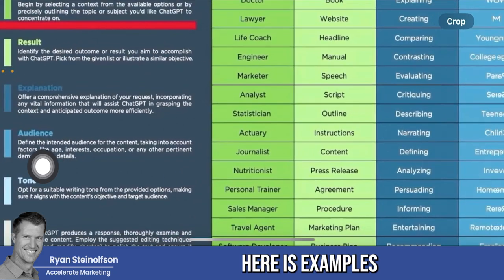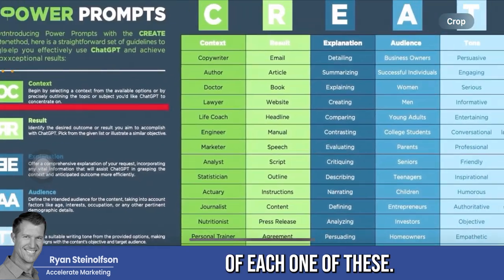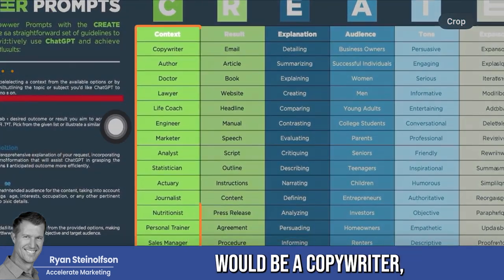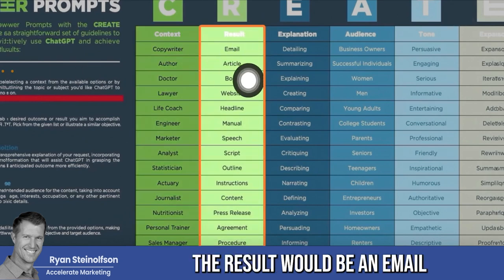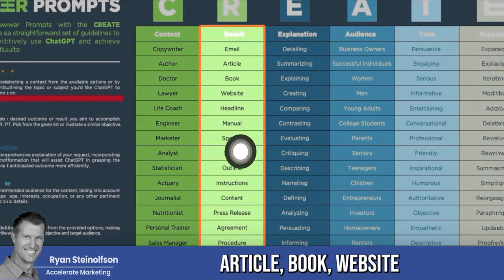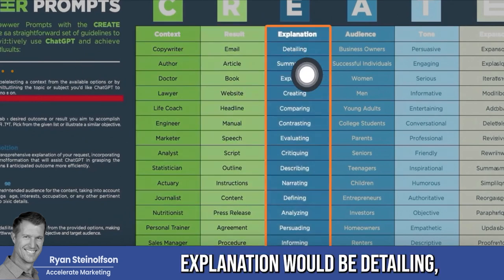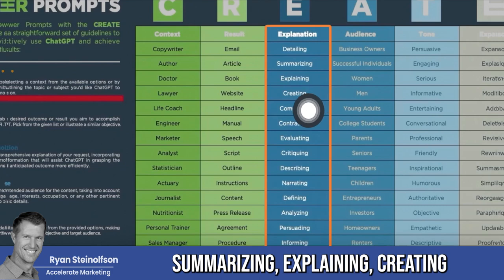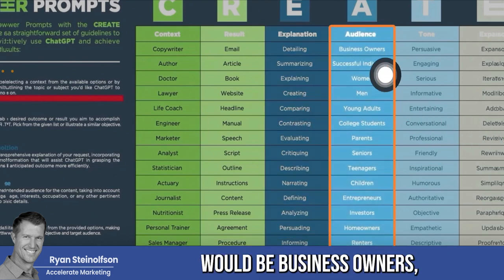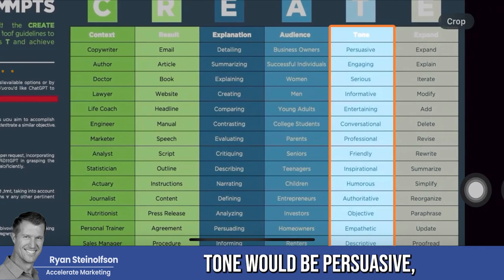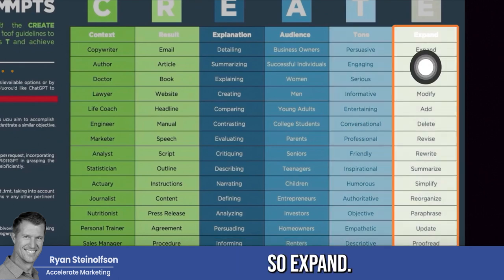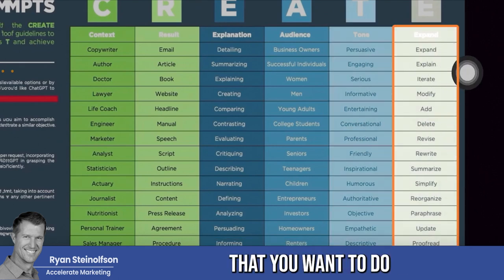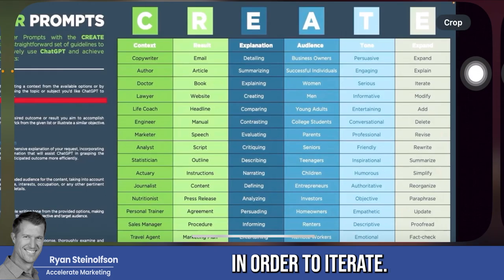Here are examples of each element. Context could be a copywriter, author, etc. Result could be an email, article, book, or website. Explanation includes detailing, summarizing, explaining, or creating. Audience could be business owners, successful individuals, women, or men. Tone could be persuasive, engaging, and so on. These are all the things you want to consider in order to iterate effectively.